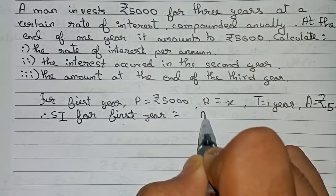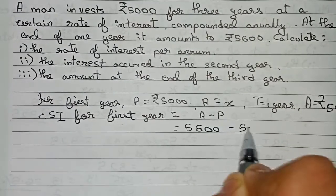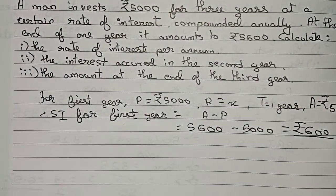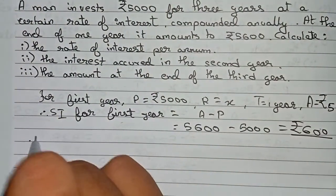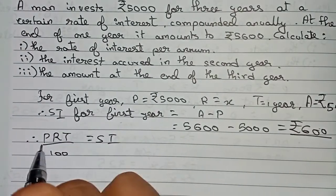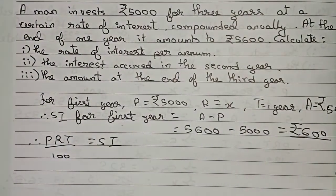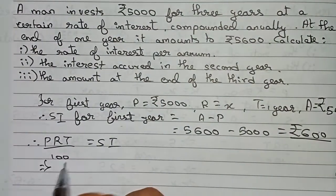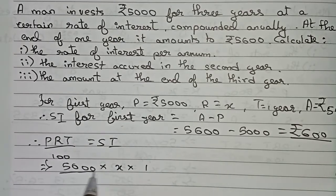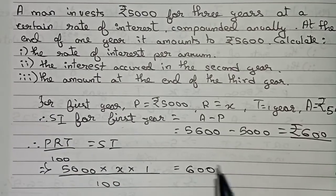The formula is SI equals amount minus principal. So SI = 5600 minus 5000, which equals rupees 600. Now we use the formula PRT by 100 equals SI — that is, principal into rate into time divided by 100 equals the simple interest. Putting in the values: 5000 into x into 1 divided by 100 equals 600.